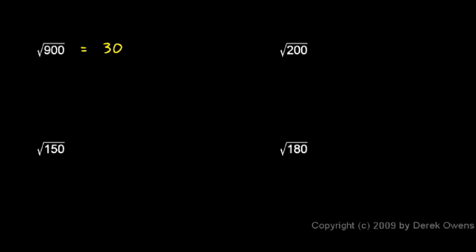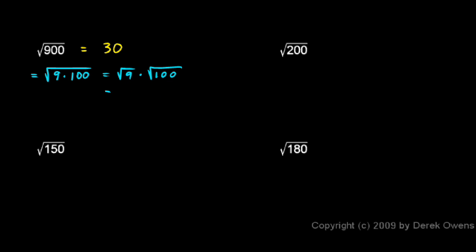If you didn't know that, there's another way you can get there. The square root of 900 is the square root of 9 times 100 — we simply take the 900 and factor it. If you have the square root of one thing times another thing, that's simply the square root of the first thing times the square root of the next thing. The square root of 9 is 3 and the square root of 100 is 10, so this is equal to 3 times 10, which is 30.